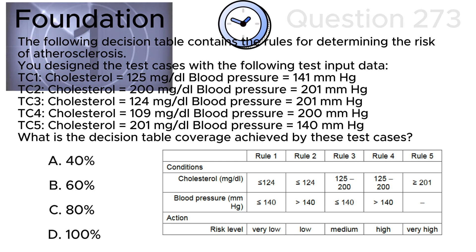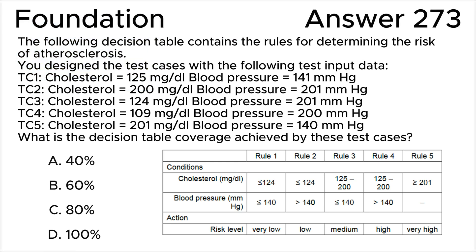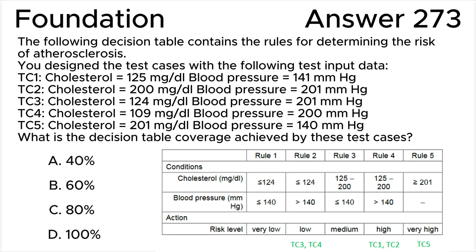According to the ISTQB syllabus, to achieve 100% coverage with this technique, test cases must exercise all columns. There are five columns in the decision table. Each test case covers one of them. Test case 1 and test case 2 both together cover rule 3. Test case 3 and test case 4 both cover rule 2.